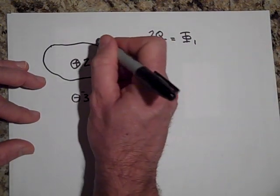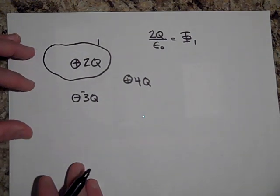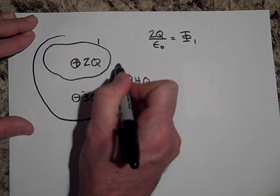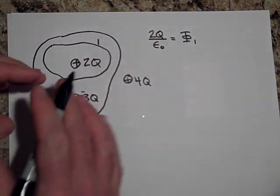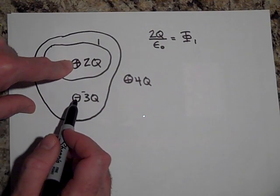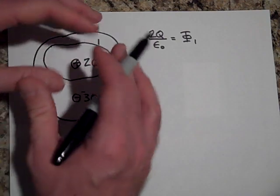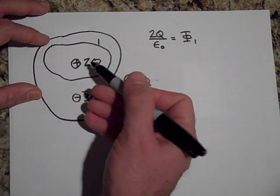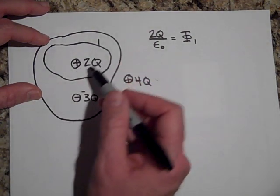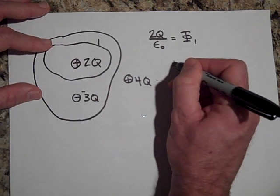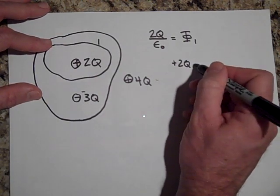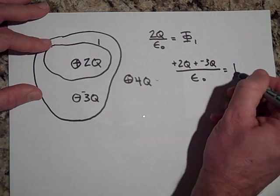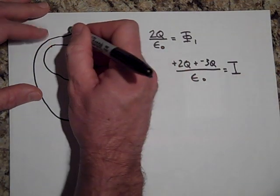Okay, what if we had another surface that looked like this? What's the total flux through that surface that encloses both the positive 2Q and the negative 3Q? So it's got some volume to it and it encompasses those. Well, the total flux is just going to be the total charge enclosed, so 2Q minus 3Q, so plus 2Q plus a negative 3Q all over epsilon naught. That's your net flux through surface two. We'll call that surface two.